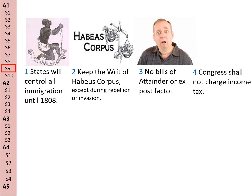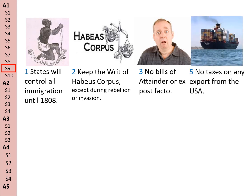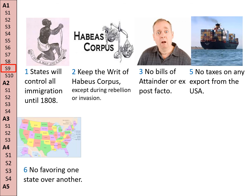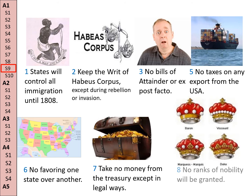Limit four: Congress shall not charge income tax, but this limit was changed by the 16th Amendment. Limit five: no taxes shall be put on any export from the USA — we want to be able to sell our goods overseas. Limitation six: Congress shall not favor one state over another. Limitation seven: they can take no money from the Treasury except in legal ways. And limitation eight: no ranks of nobility will be granted — no dukes, barons, counts, or anything like that.